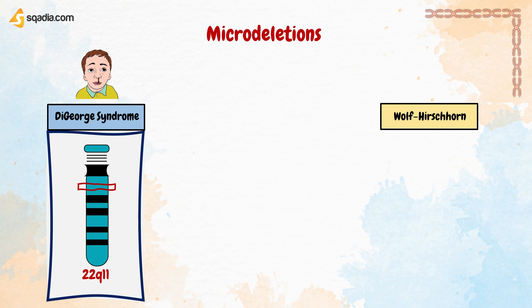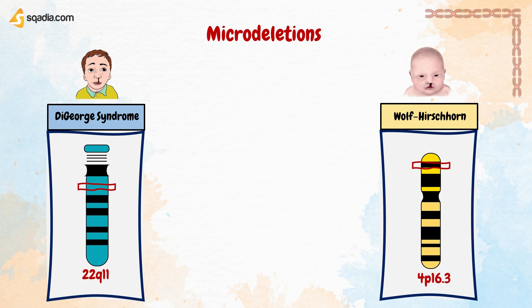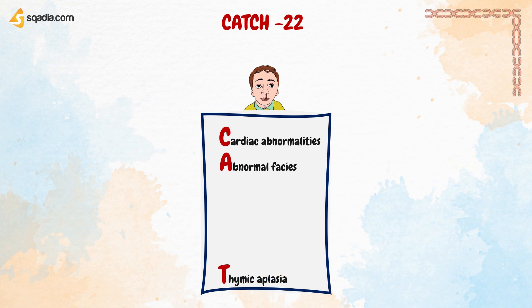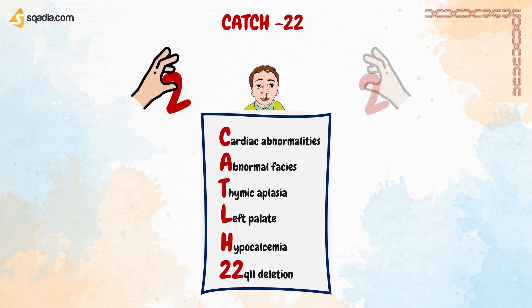DiGeorge syndrome is a condition present from birth that can cause a range of lifelong problems, including heart defects and learning difficulties. Also, Wolf-Hirschhorn syndrome at 4p16.3 — meaning chromosome 4, short arm P, at band 16.3 — is a genetic condition affecting the face, heart, brain, and height. You can memorise the symptoms of DiGeorge syndrome using the mnemonic CATCH-22: Cardiac abnormalities, Abnormal faces, Thymic aplasia, Cleft palate, Hypocalcemia, and 22q11 deletion.